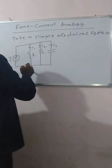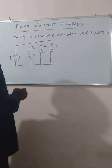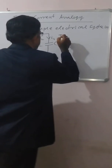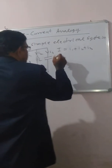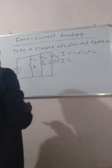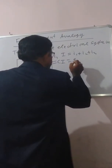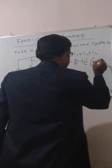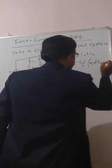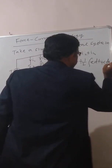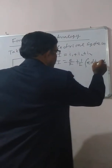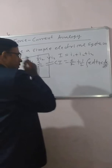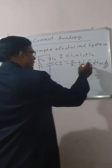By applying KCL — Kirchhoff's current law — total current at the junction I is equal to I1 plus I2 plus I3, that is E/R plus (1/L)∫E dt plus C dE/dt across the capacitor.